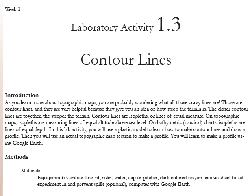Laboratory activity 1.3 is about contour lines. As we mentioned in lab activity 1.2, a good earth scientist not only knows about earth science facts and how to do science, but also knows how to get around on the earth, move from one place to the other, and get a feel for how the earth changes and how mountains, volcanoes, and valleys are shaped.